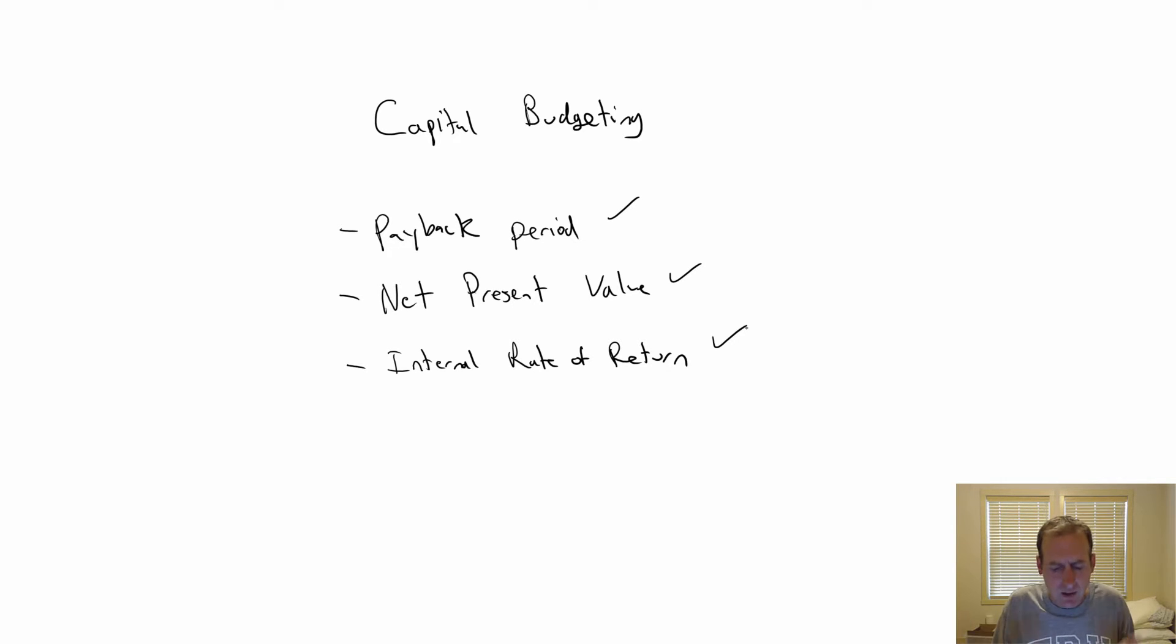I wanted to give you an idea of what capital budgeting is before we get to the problems. It's when a company's planning to make a big investment or purchase, they're planning to buy a big asset. What thought process should go into it? The challenge with these big purchases is that they're generally an asset you're going to use for many years. You have to make projections and estimates.